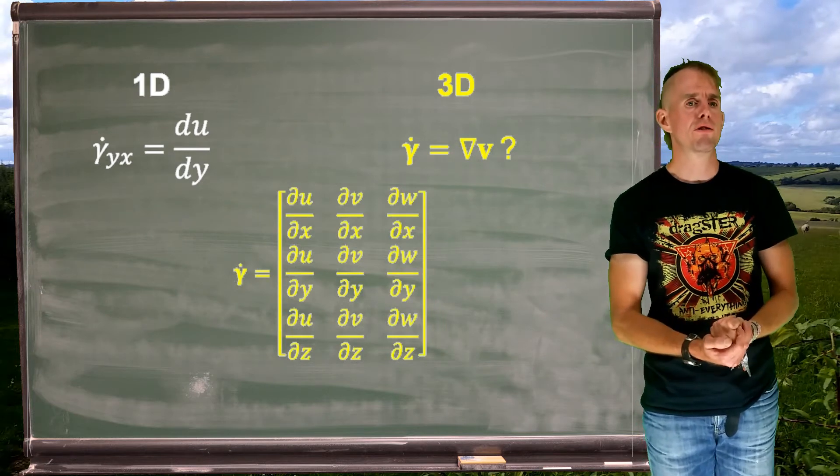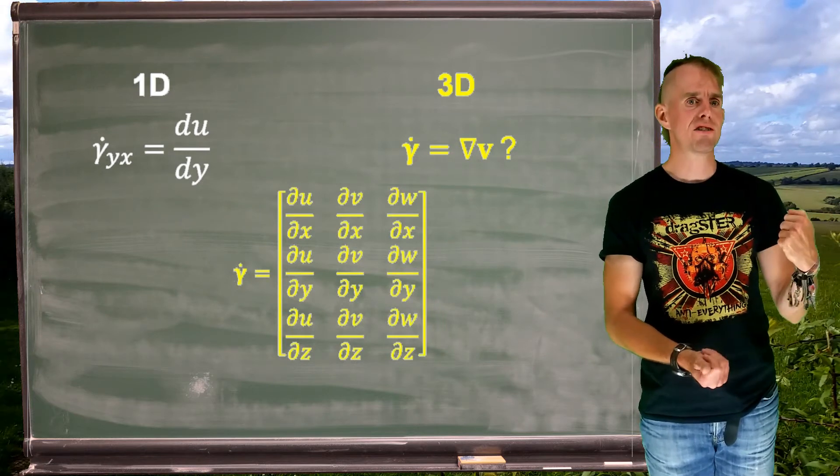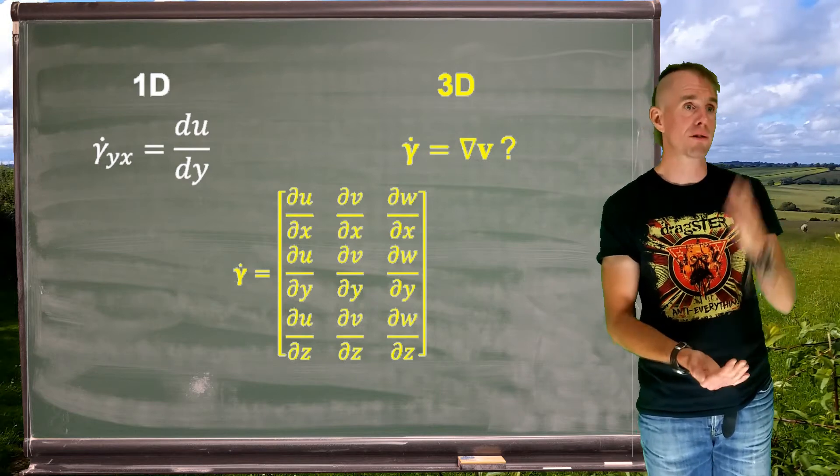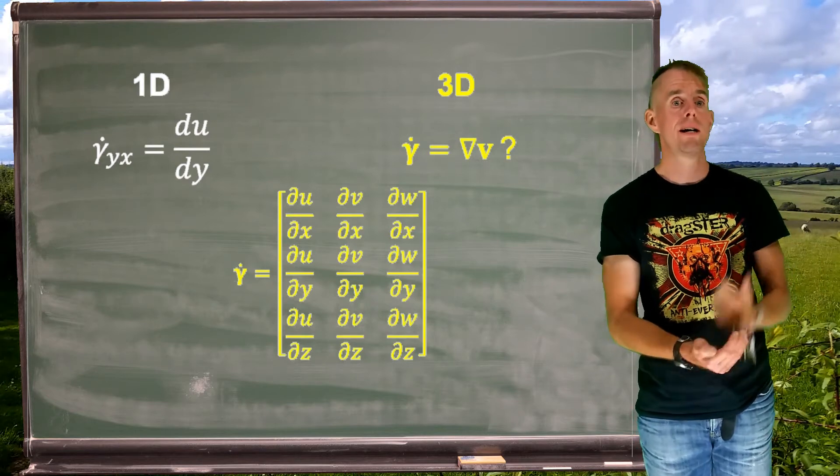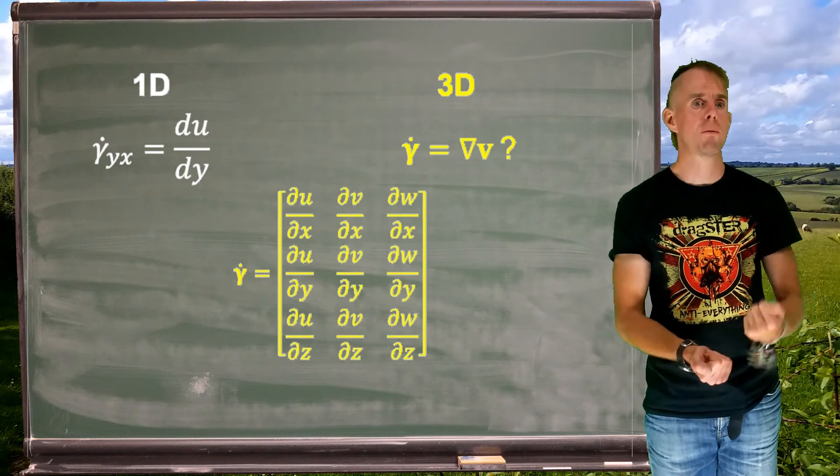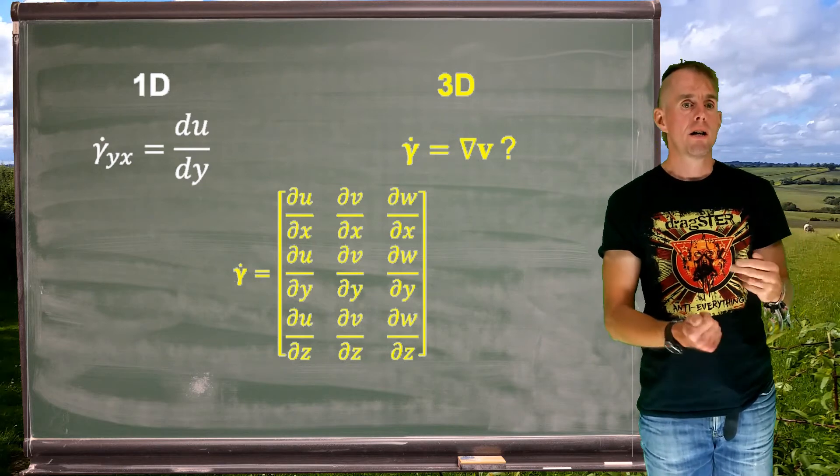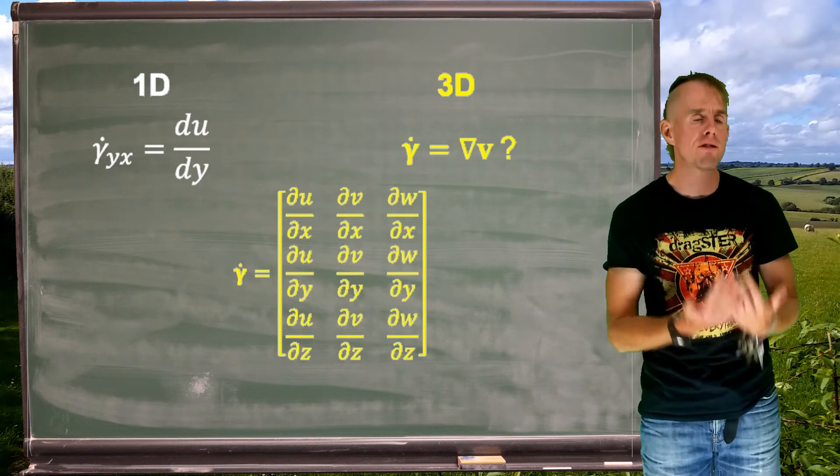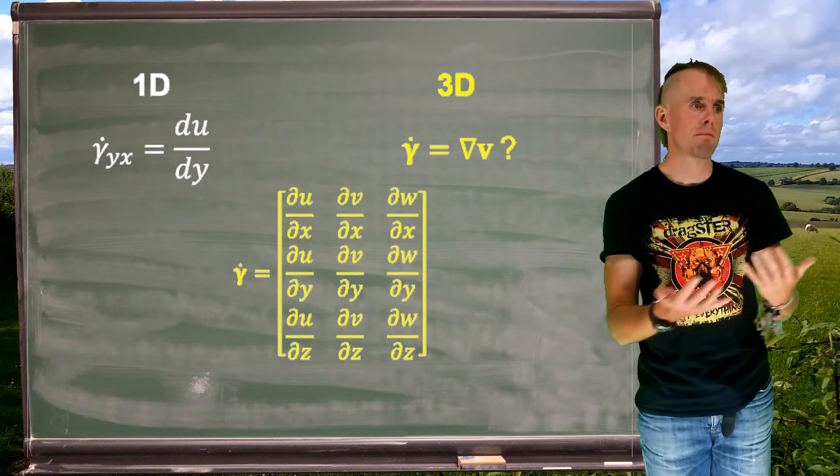If we look across a row, we have du by dx, dv by dx, dw by dx. If we look down a column, for example the first column is du by dx, du by dy, and du by dz. So we have succeeded in capturing all the information about velocity gradients within this flow.